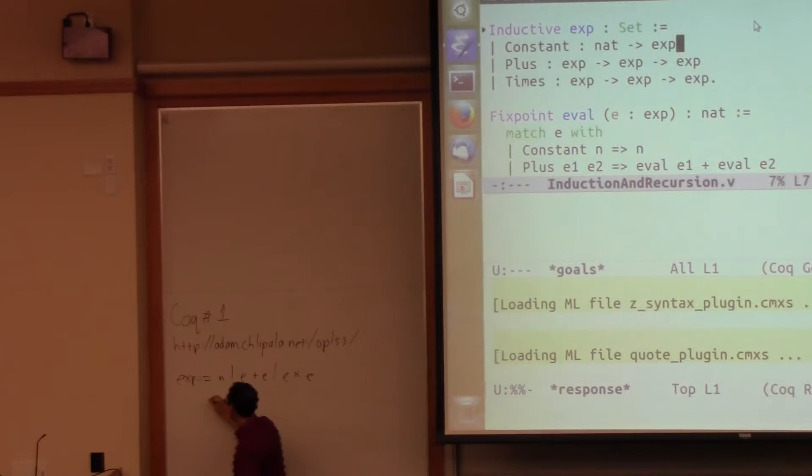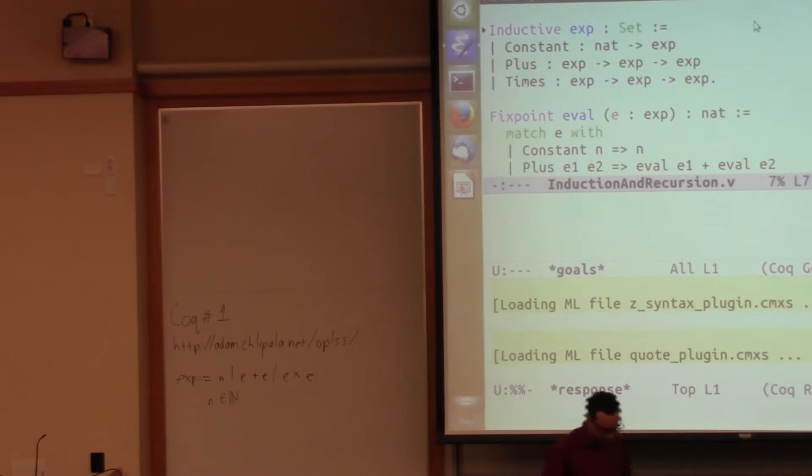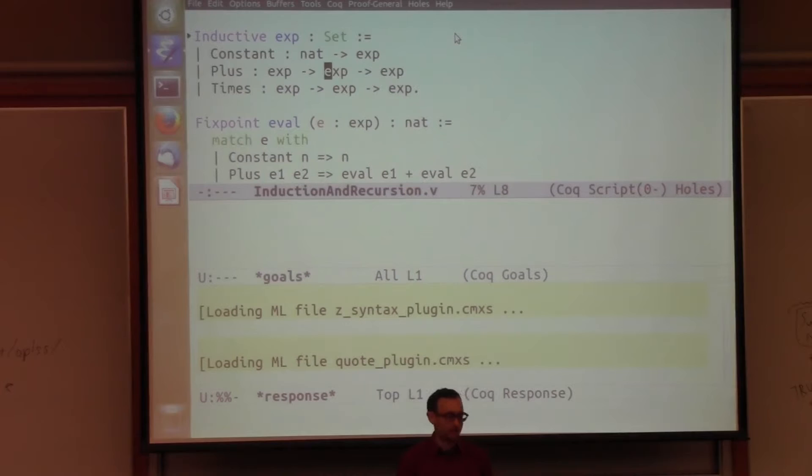So let me actually write up on the board grammar for this just so it's completely clear what we're talking about. This is basically saying expression is a number or an addition of two expressions or multiplication of two expressions and the numbers are drawn from the natural numbers.